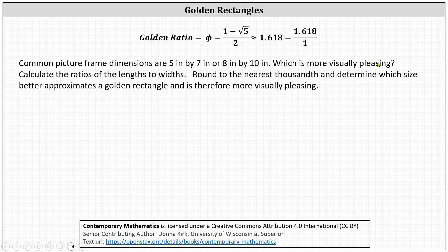To answer the question, we calculate the ratios of the lengths to the widths. We'll round that value to the nearest thousandth and determine which size better approximates a golden rectangle and is therefore more visually pleasing.